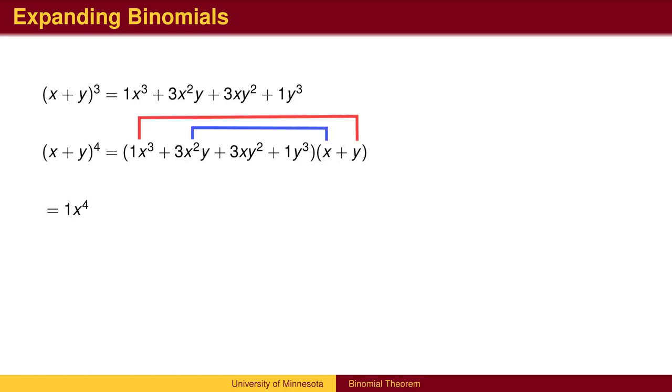The next two terms will involve x cubed times y. The total will come from adding two coefficients, the coefficients corresponding to the previous row of Pascal's triangle. We will also get two terms involving x squared y squared, two terms involving x times y to the third, and finally y to the fourth.